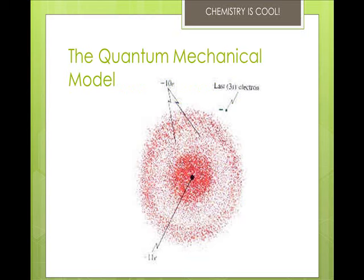Energy is quantized which means it comes in chunks. Quanta is the amount of energy needed to move from one energy level to another or a quantum leap in energy. Schrödinger derived an equation that described the energy and position of the electrons in an atom. He was kind of famous for his cat. He treated the electrons as waves rather than as particles and this model is a mathematical solution but not anything that you can see.